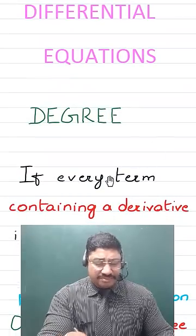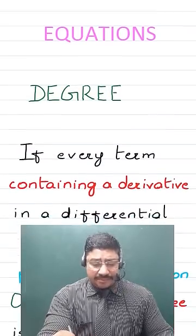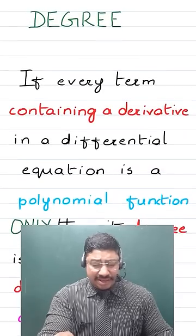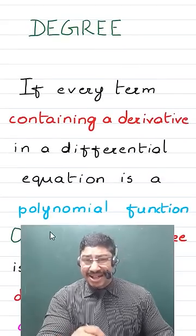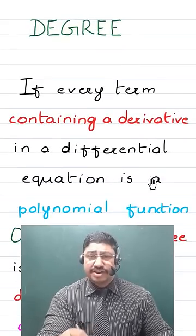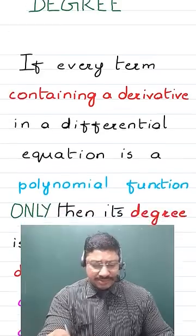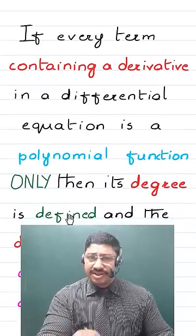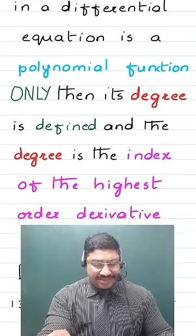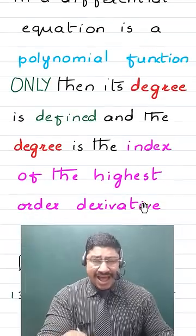If every term containing a derivative in a differential equation is a polynomial function - that means an algebraic function where the power of the variable is from the set of natural numbers - only then its degree is defined. And the degree is the index of the highest order derivative.